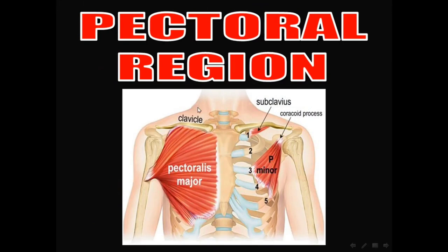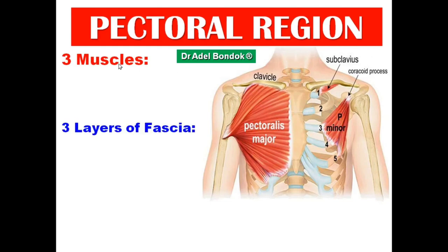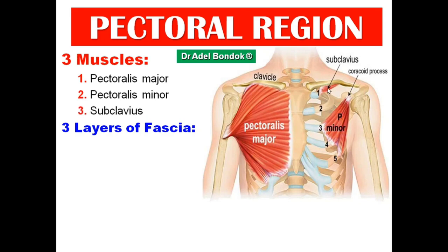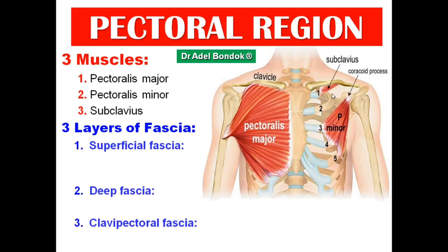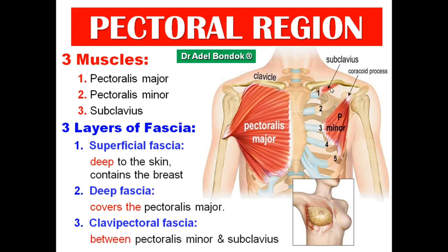Now we start with the pectoral region, which contains three muscles and three layers of fascia. The three muscles: the anterior layer is the pectoralis major; the posterior layer is formed of two muscles — pectoralis minor and the subclavius. The three layers of fascia are: the superficial fascia deep to the skin, which contains the mammary gland or breast; the deep fascia that covers the pectoralis major; and the clavipectoral fascia in this area, filling the space between pectoralis minor and the subclavius.